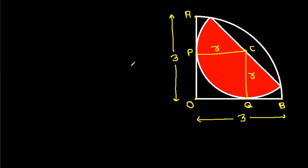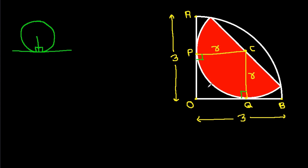Now, in any circle, the radius and tangent are perpendicular to each other. So this angle will be 90 degrees, and this angle will be 90 degrees. And AOB is a quarter circle, so that angle will also be 90 degrees.